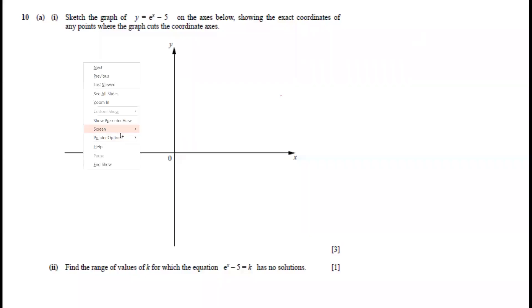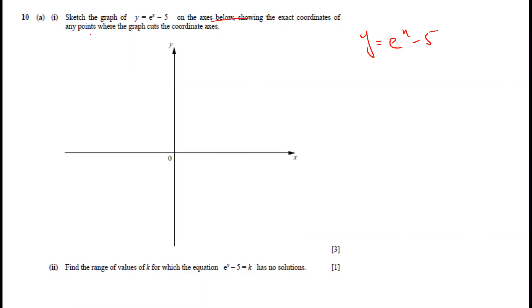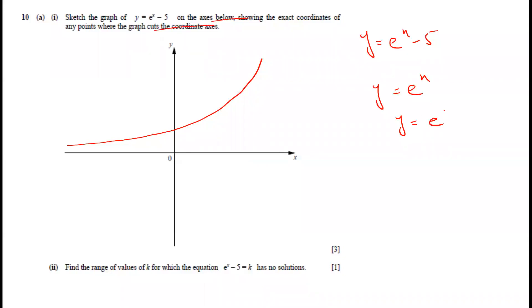Question 10: sketch the graph of y = eˣ - 5 on the axis below, showing the exact coordinates of any points where the graph cuts the coordinate axes. First, we sketch y = eˣ. The graph never touches the x-axis, and when x = 0, e⁰ = 1, so it intersects the y-axis at (0, 1). This is the only intersection point; it will never intersect the x-axis.